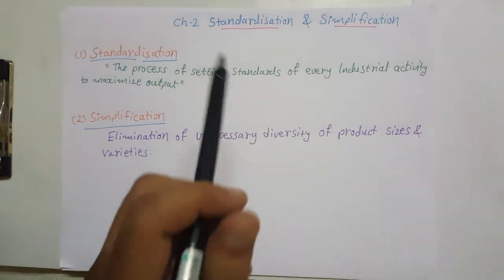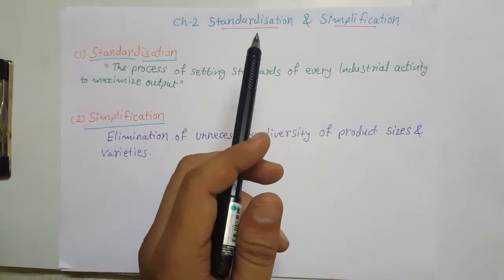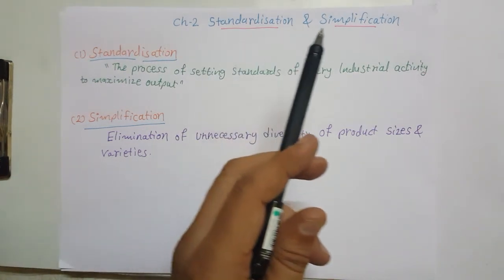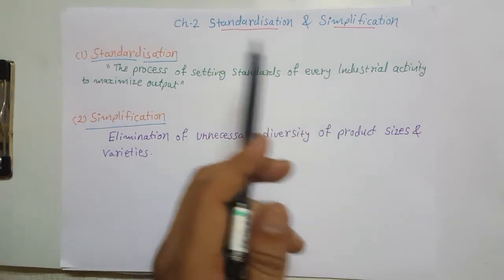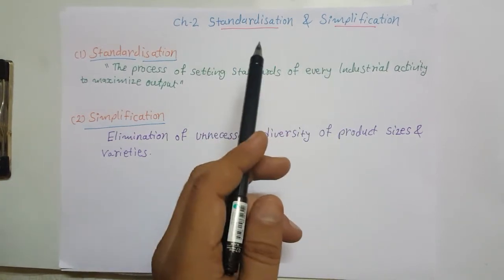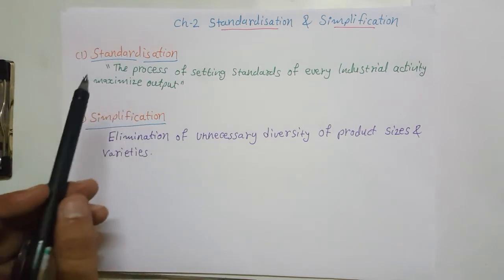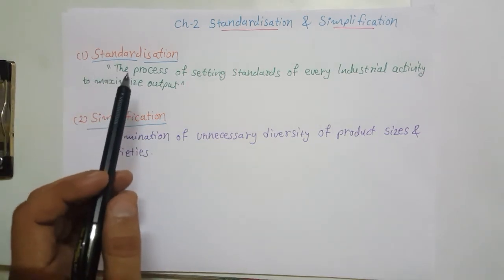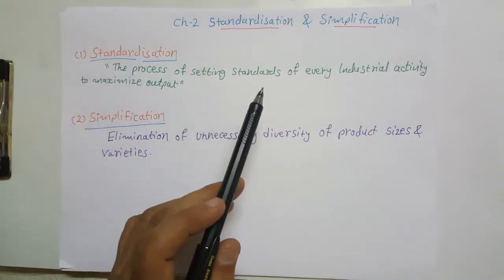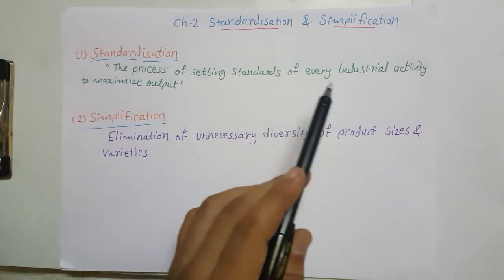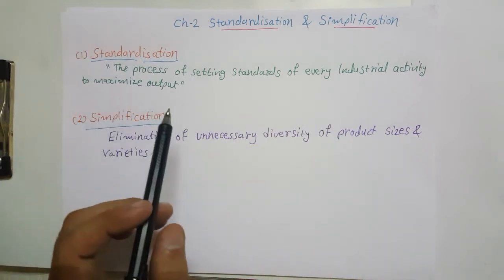Let's start the next topic of this chapter: standardization and simplification. It is one of the techniques of scientific management. Standardization is a process of setting standards for every industrial activity to maximize the output.